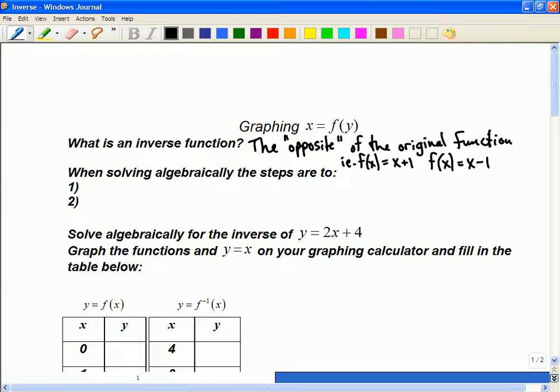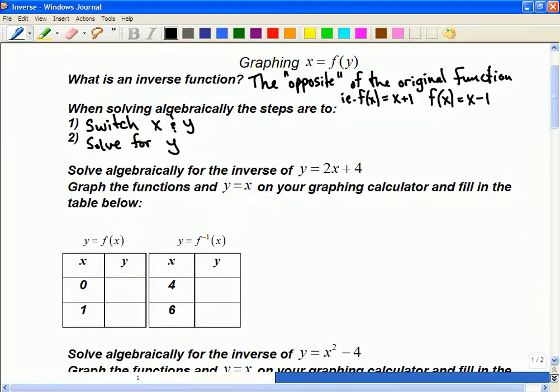If x plus 1 is your function, and you want to undo that, what you did was add 1. So to undo it, you'd subtract 1. It will be more precise about it here. When you're solving algebraically for an inverse, the steps are pretty simple. Not always simple to find, but fortunately for us, we're limited to very specific, simple cases. So the steps are to switch x and y and solve for y.